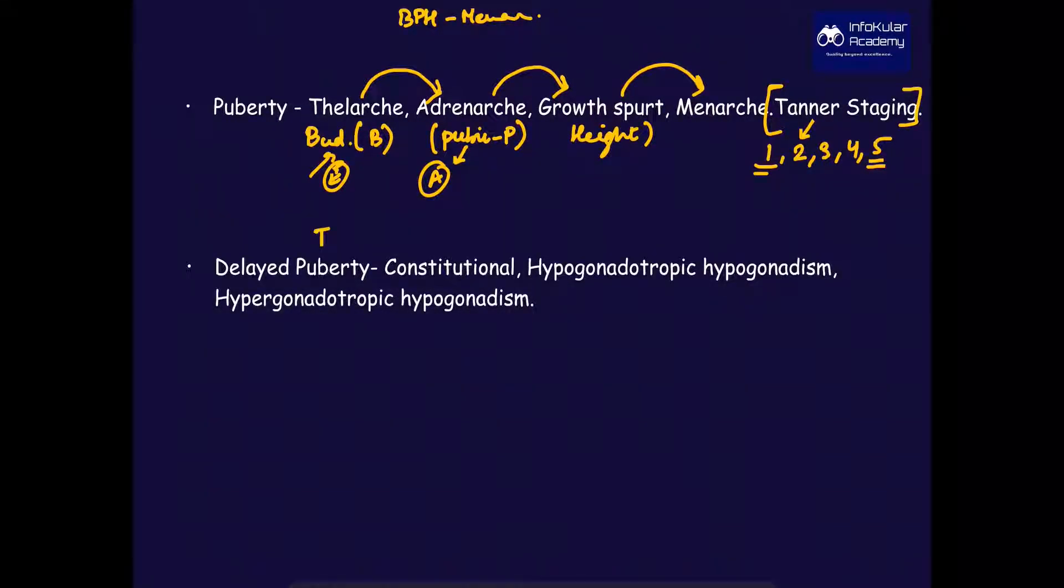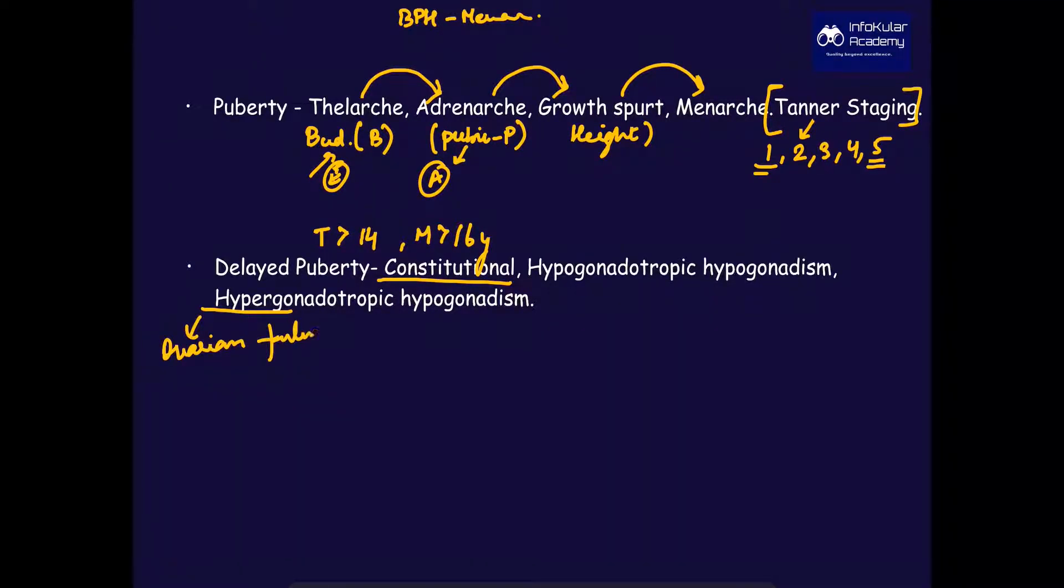Delayed puberty occurs when thelarche or breast budding occurs after the age of 14 years and menarche occurs after the age of 16 years. The causes are constitutional, which is the most common cause in males, hypogonadotropic hypogonadism, and hypergonadotropic hypogonadism.